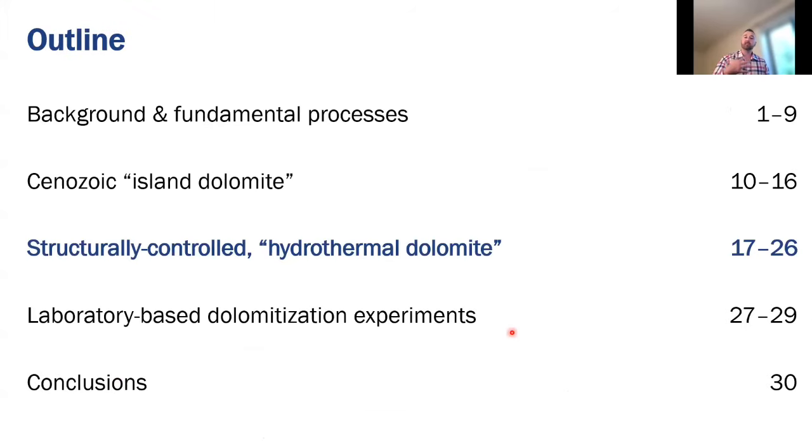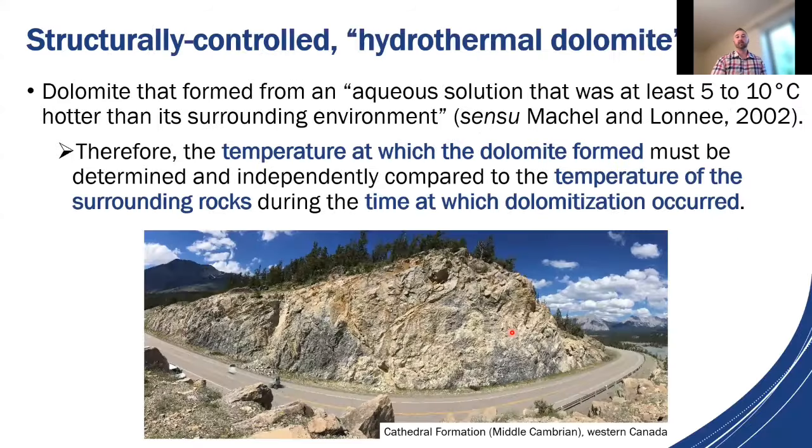All right so moving on the next type of dolomite that we'll discuss here is what many people refer to as structurally controlled hydrothermal dolomite. So the preferred definition here comes from Machel and Lonnee 2002 where the dolomite formed from a fluid that was at least 5 to 10 degrees hotter than its surrounding environment and that's important because you can have geothermal dolomitization under elevated pressure-temperature conditions but it's simply just a function of burial depth and higher temperatures. And I really just want to emphasize here that there's these three pieces to the puzzle. You need to know both the dolomitization temperature and the host rock temperature at the timing of dolomitization. Now the last two of those are a little bit more challenging to evaluate but I'll walk us through a case study here in western Canada and how we tackled this problem.